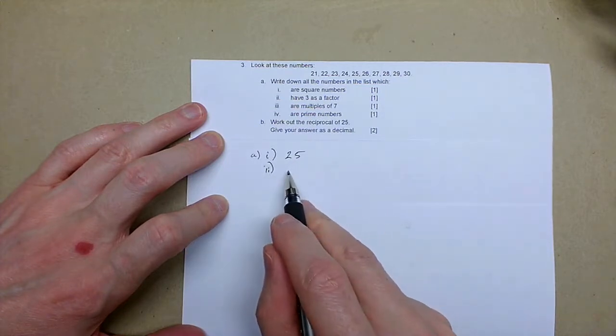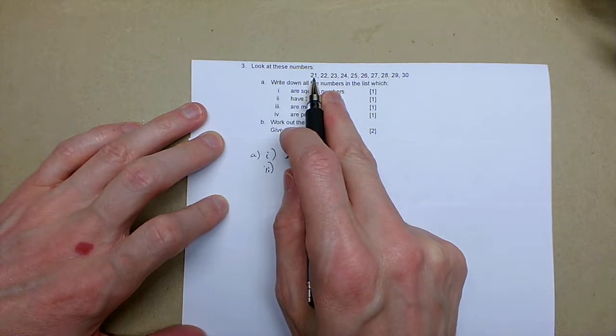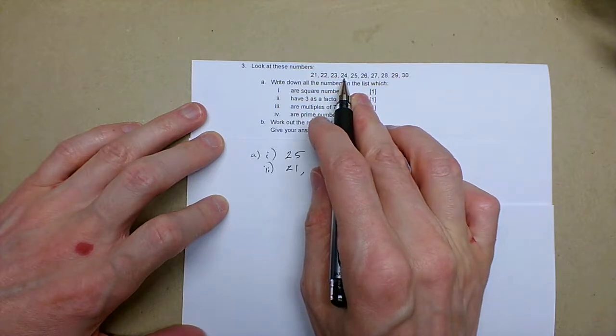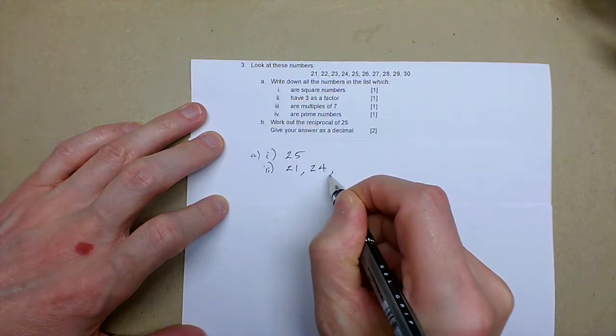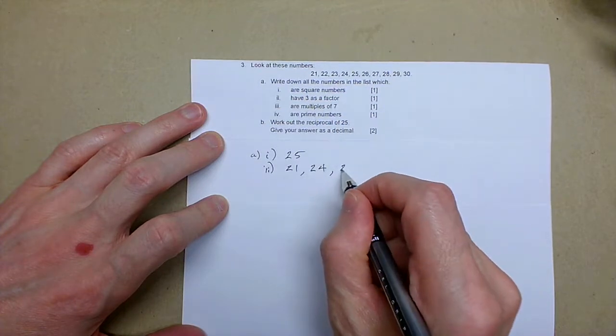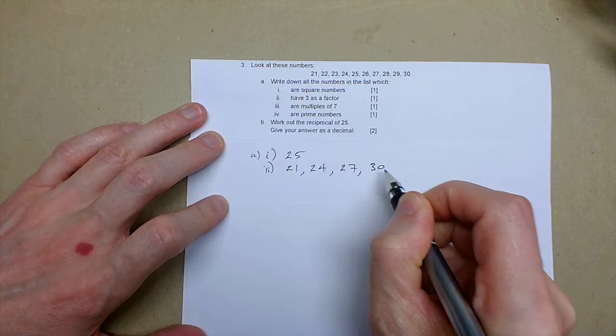Question two have three as a factor. We know 21 is three sevens, 24 is three eights, 27 is three nines, and 30 is three tens.